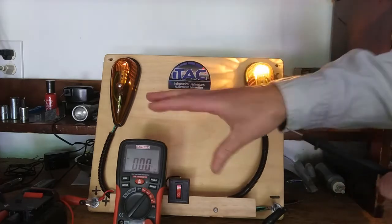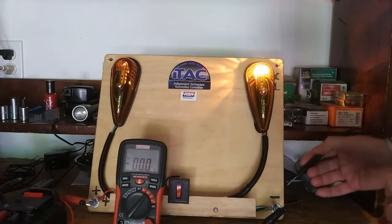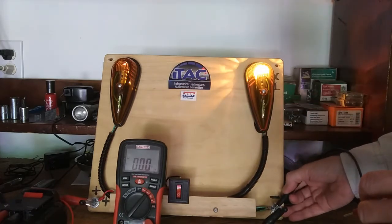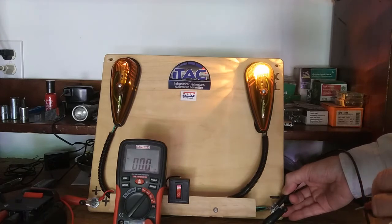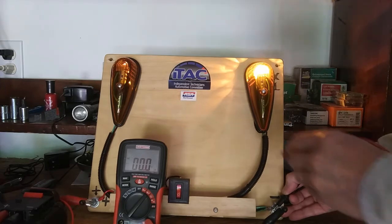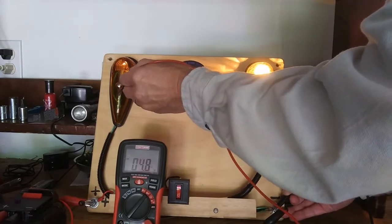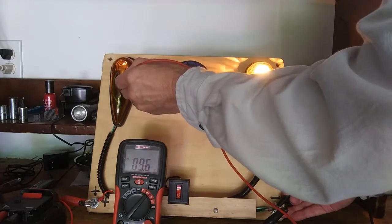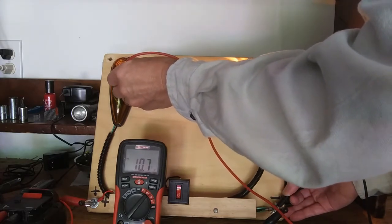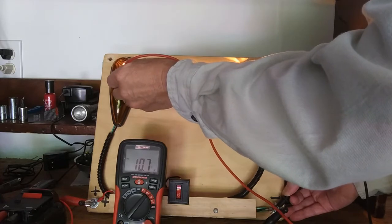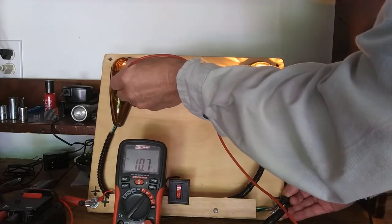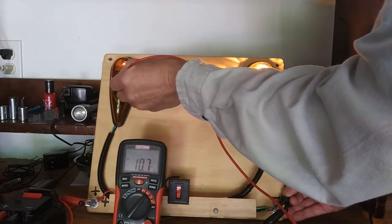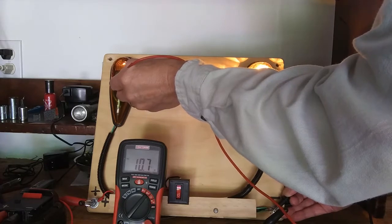First thing we're going to do is get our meter set up to the proper scale, and then we're going to hook our black lead to the most negative of our circuit. We're just trying to test this ground circuit, and as you can see on the meter, we're dropping almost 11 volts.